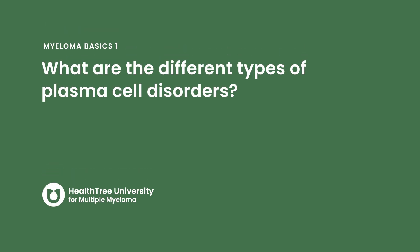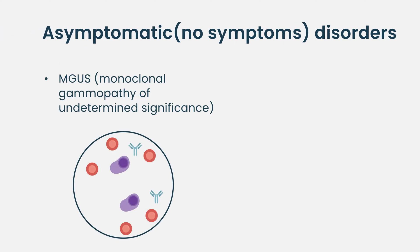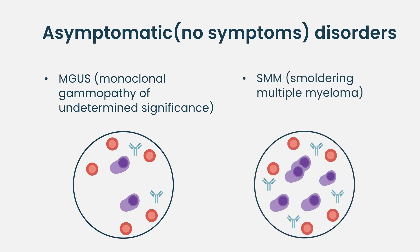What are the different types of plasma cell disorders? We actually have a lot of different ways that we use to classify plasma cell problems. The most important is to differentiate between disorders that are symptomatic and asymptomatic. The terms we use for asymptomatic disorders include monoclonal gammopathy of undetermined significance, abbreviated MGUS, and smoldering multiple myeloma, often abbreviated SMM.